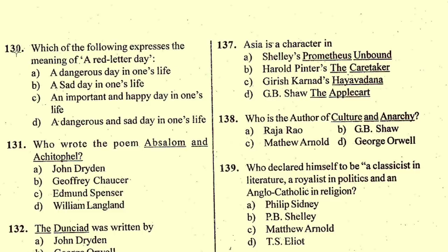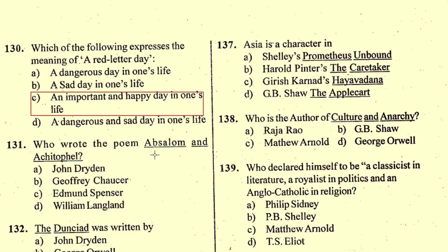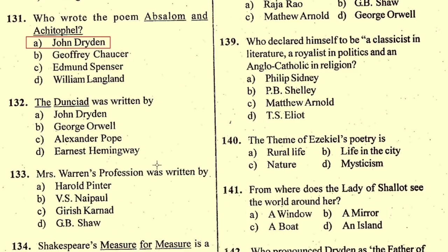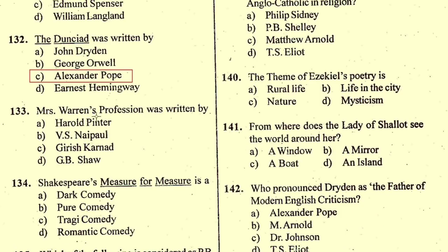Question number 130: Which of the following expresses the meaning of 'a red letter day'? Option C is correct — an important and happy day in one's life. Question number 131: Who wrote the poem 'Absalom and Achitophel'? This poem was written by John Dryden, option A. Question number 132: 'The Dunciad' was written by — option C, Alexander Pope. Question number 133: 'Mrs. Warren's Profession' was written by — option D, G.B. Shaw.